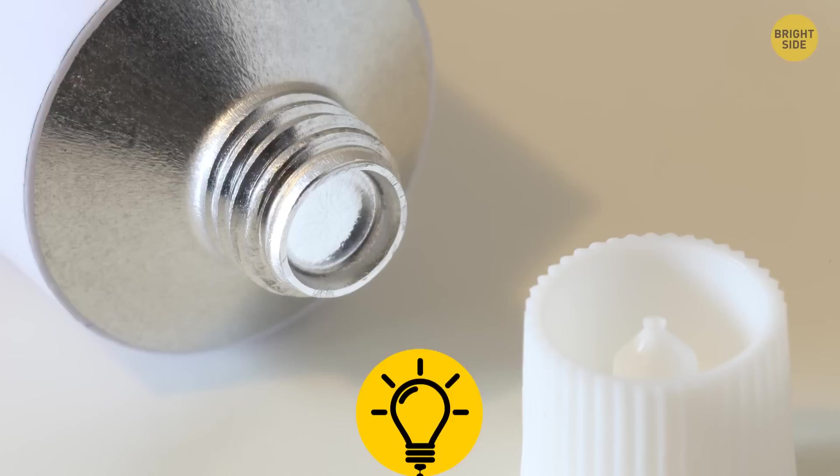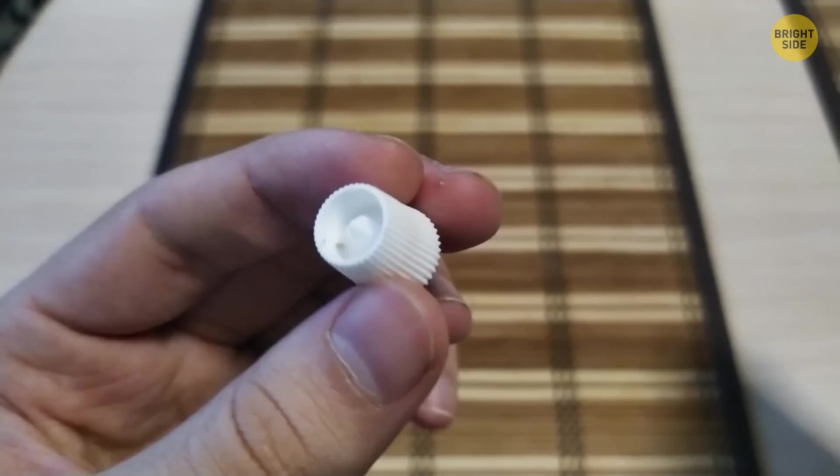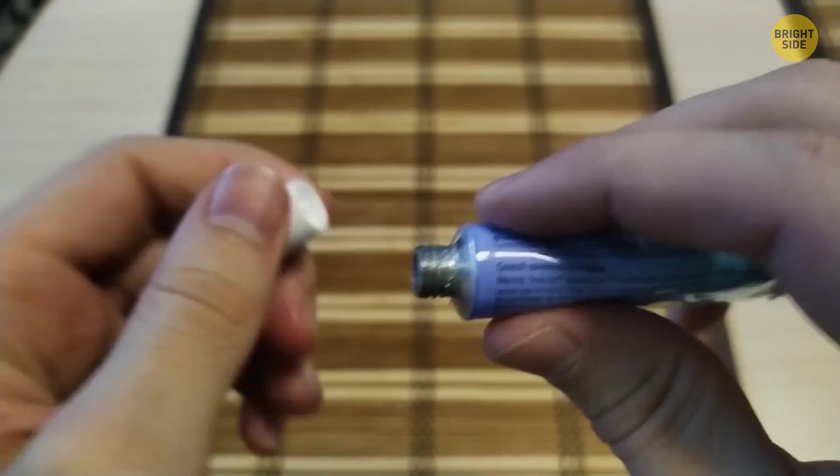That knobbly bit sticking out of the cap of your favorite cream is there for a reason. These tubes are usually sealed with foil. So, unless you love breaking your nails trying to open them, just flip the cap over and push.